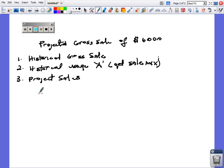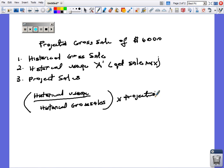We use the formula of historical usage divided by historical gross sale, then multiply that by projected sales. We substitute: 500 divided by 30,000 times 6,000.